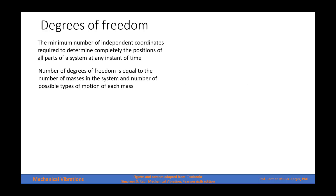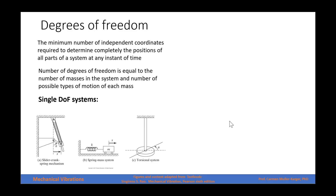We define the degrees of freedom of a system as the minimum number of independent coordinates required to completely determine the position of all parts of the system at any instant of time. The number of degrees of freedom is equal to the number of masses in the system and the number of possible types of motion of each mass. Let's look at this single degree of freedom system — for example, a coil that can move through a bar. The position of this coil can be described either by angular displacement or by linear displacement, and since it's a one degree of freedom system, we choose only one coordinate.